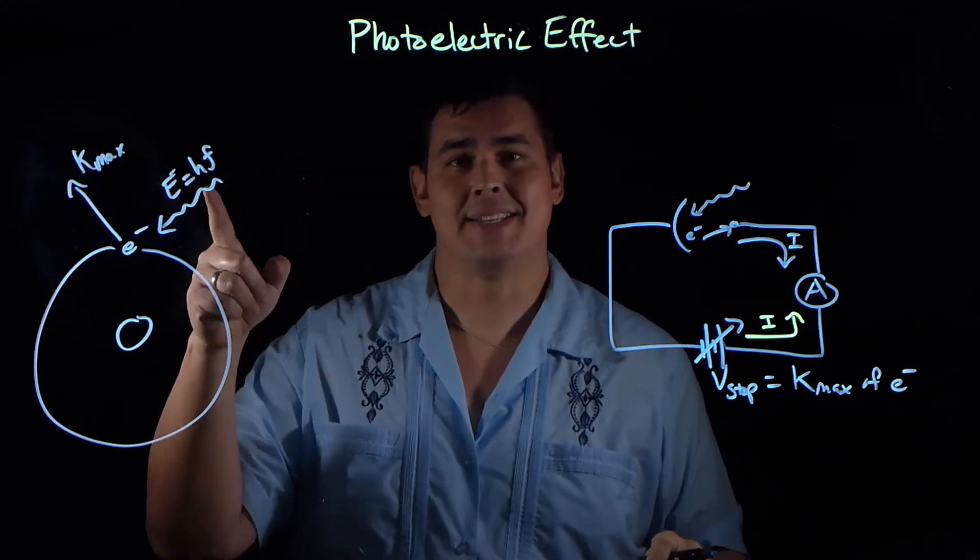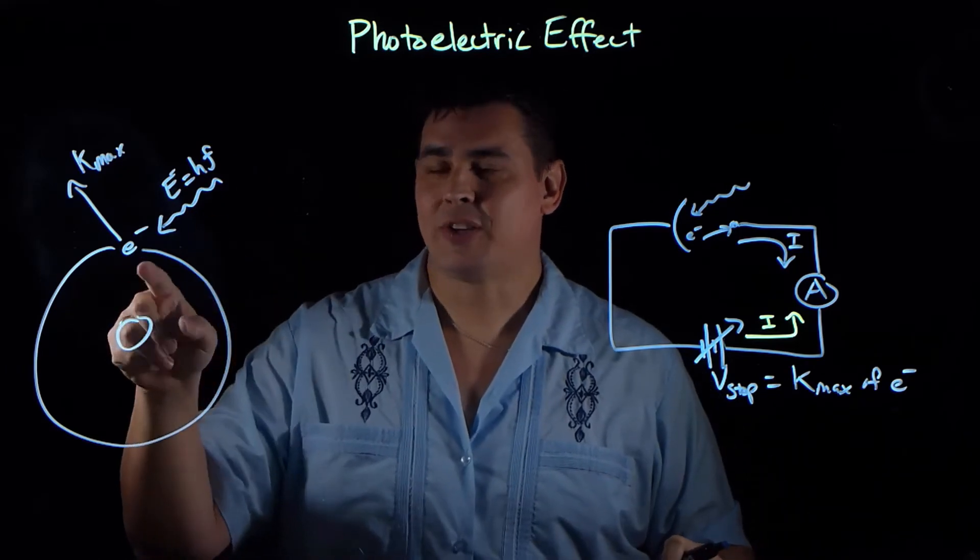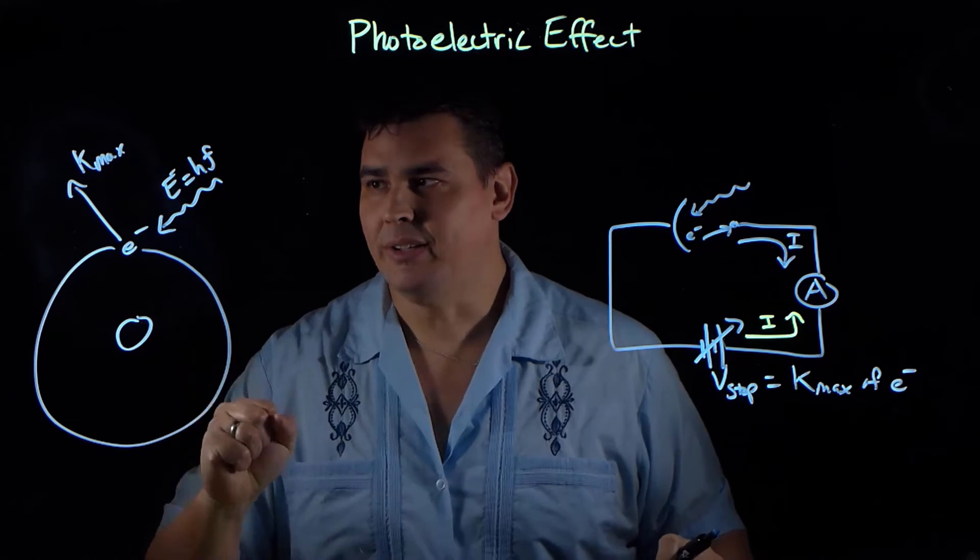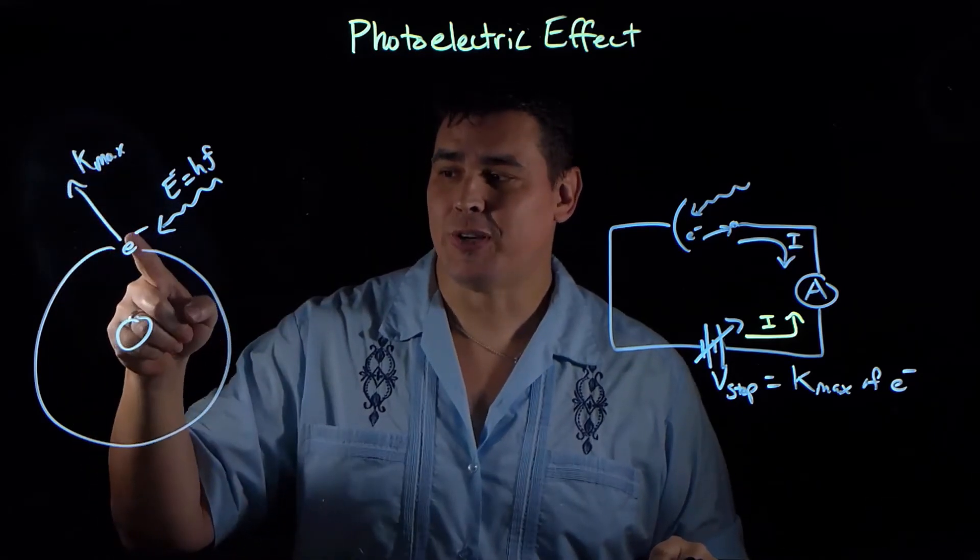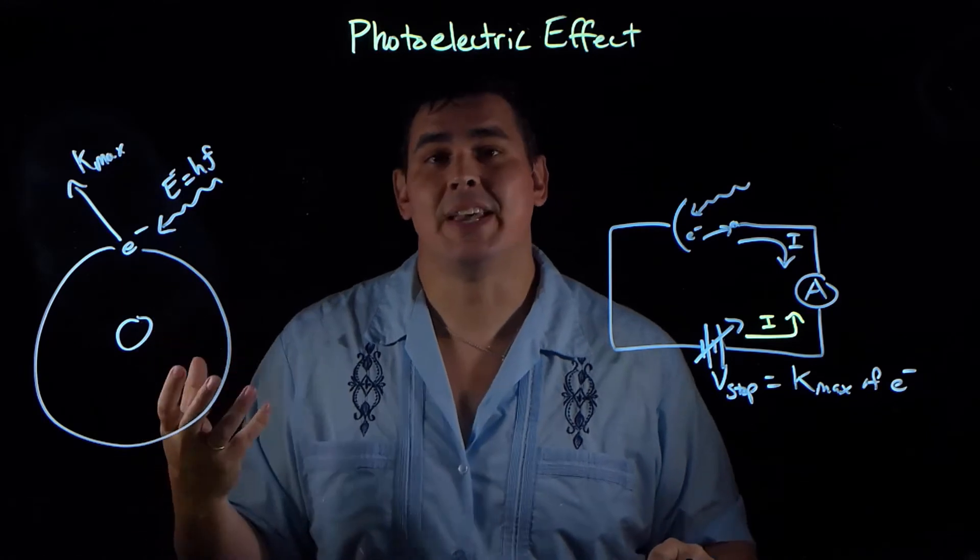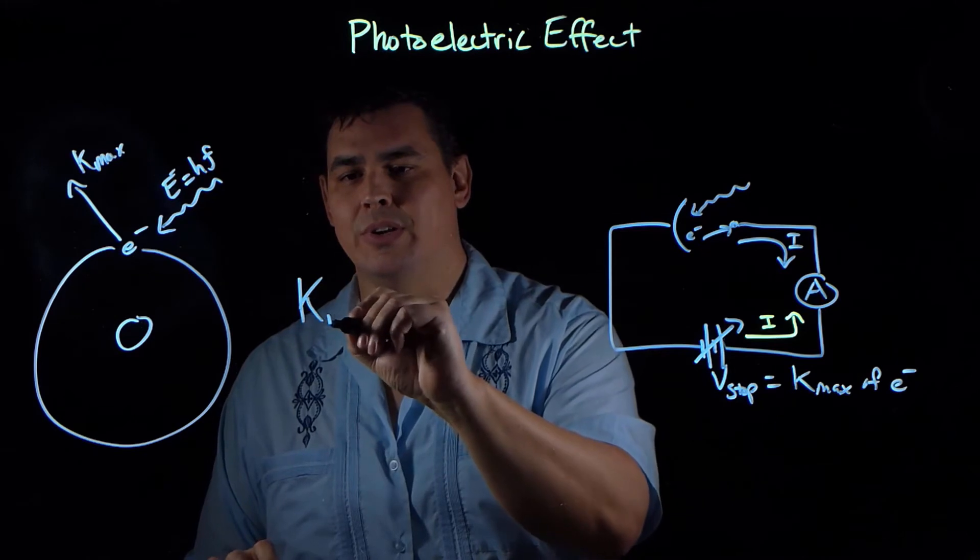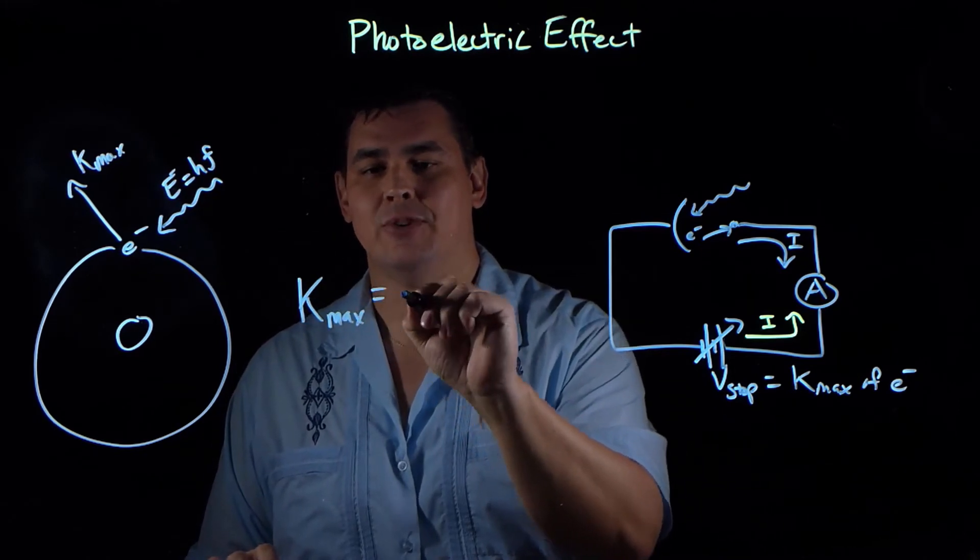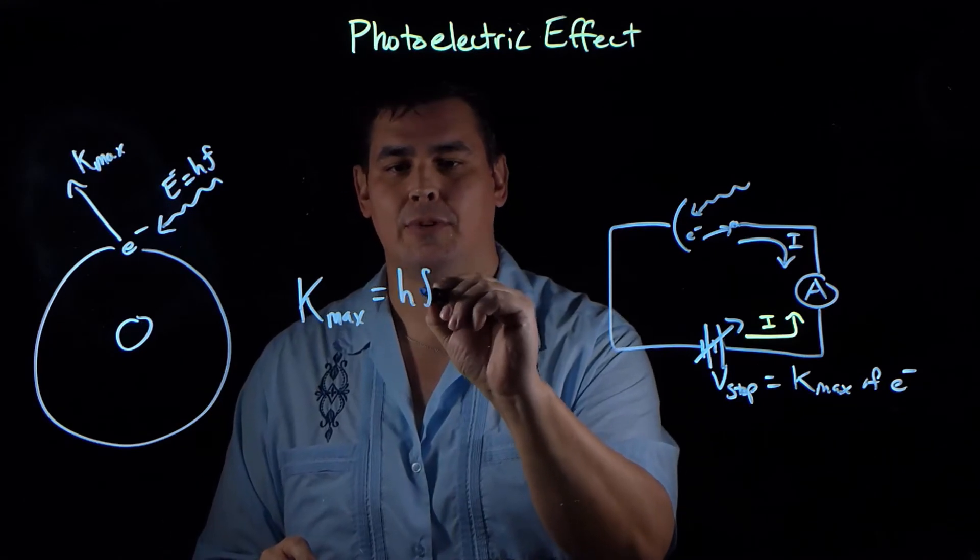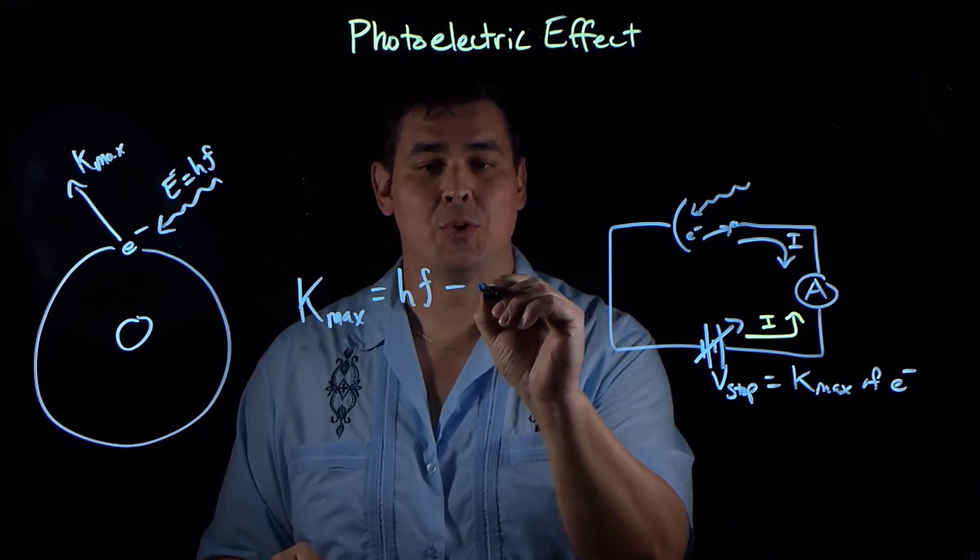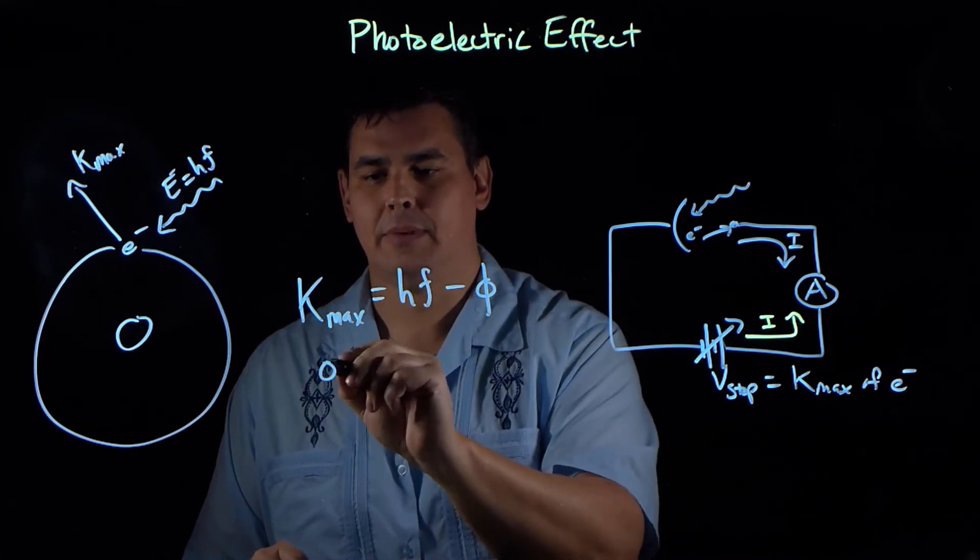So this photon comes in, it has an energy equal to Planck's constant times the frequency. And that electron absorbs the photon, takes all the energy, and it's ejected with some maximum kinetic energy. But this electron is bound to this atom, so it's going to take work to actually free the electron from the atom.